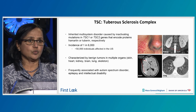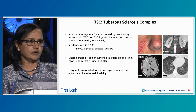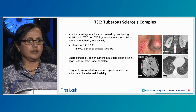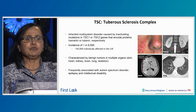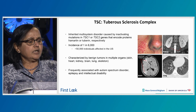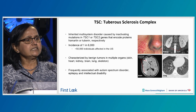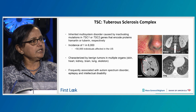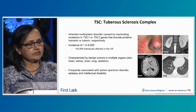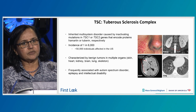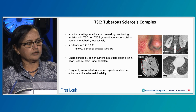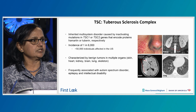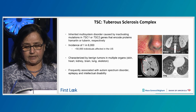Heart is one of the earlier organs also to have rhabdomyomas. Brain is the most severely affected organ, frequently associated with autism spectrum disorder, epilepsy, and intellectual disability.